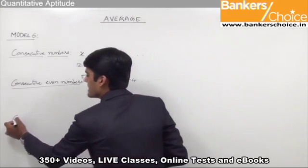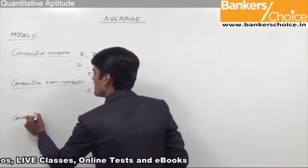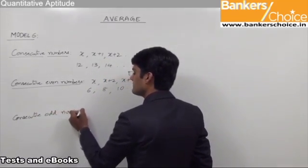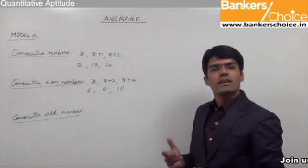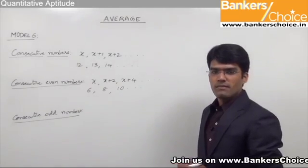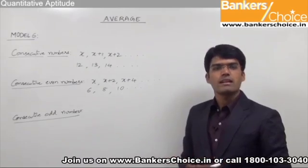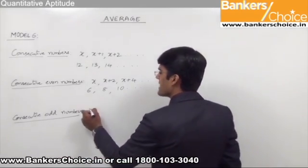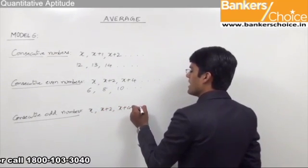The last point here is consecutive odd numbers. Consecutive odd numbers are nothing but the numbers which are odd in nature and come one after the other in a sequence. For example 1, 3, 5, 7 and so on. These are consecutive odd numbers and these numbers can also be represented as x, x plus 2, x plus 4 and so on.